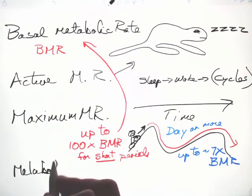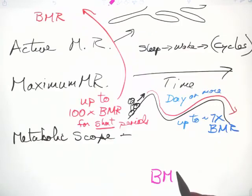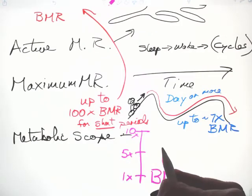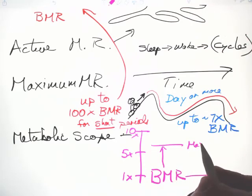Metabolic scope is the range that an animal can manage between BMR and its maximum sustained, or the maximum possible for brief periods.